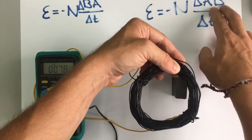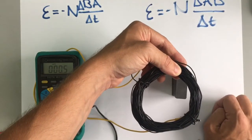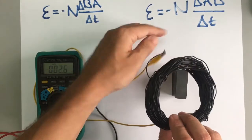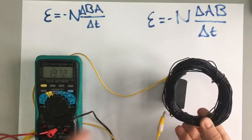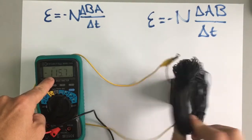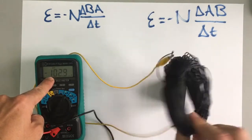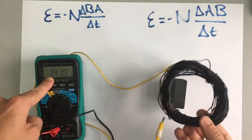So B is changing because B is changing into minus B. So the change in B is doubled. If I flip this, you'll see that again we induce an EMF and therefore we induce a current.